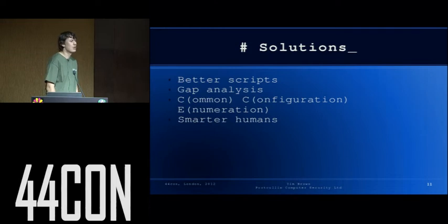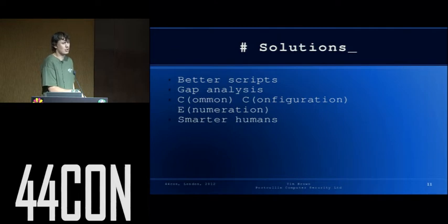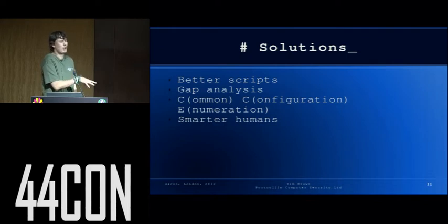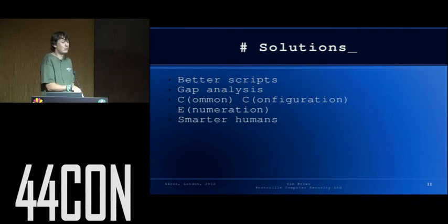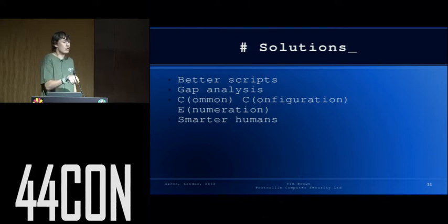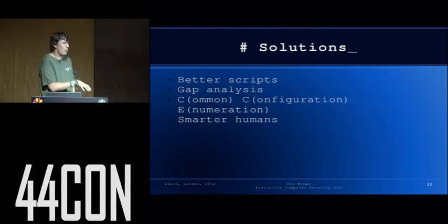So some solutions. Better scripts — we can certainly fix some of it with scripts. Some gap analysis — this is something I've been working on, taking all of the policies that exist for Unix and enterprise systems and putting together a table where I can say CIS checks for this, DOD doesn't, SANS say you should check for this, and whether the definitions are appropriate. It would be better if more people were looking at this, so come and talk to me afterwards.